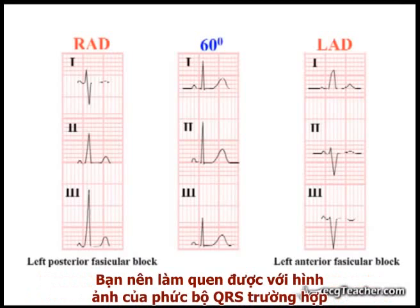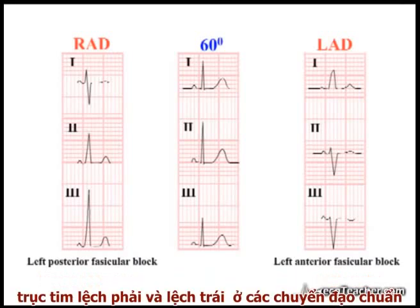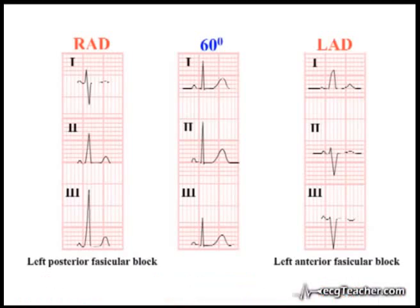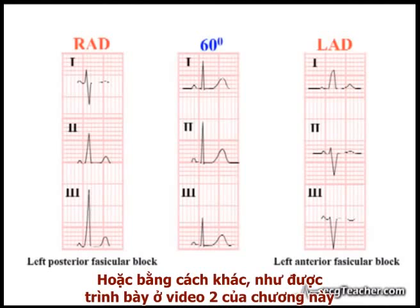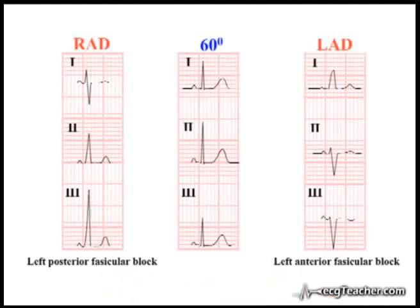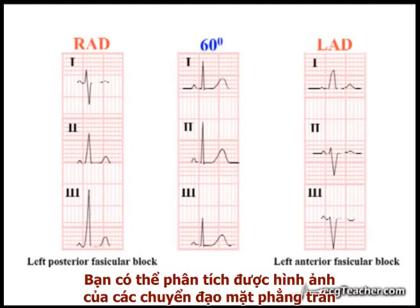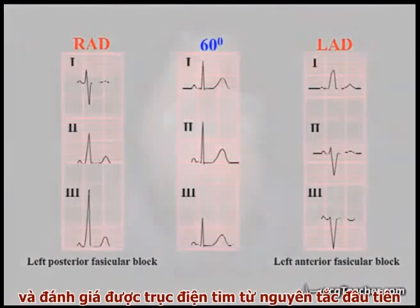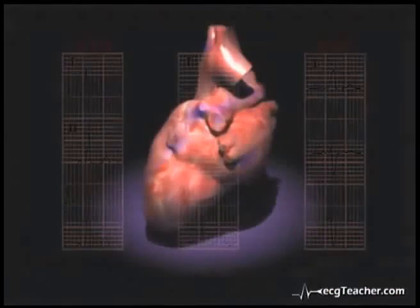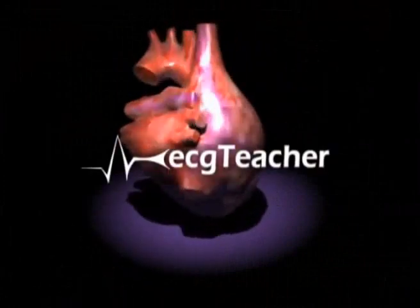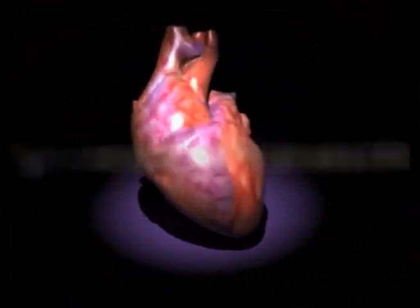It is well worth being familiar with the QRS patterns of left and right axis deviation in the standard limb leads. You may simply memorize these patterns. Alternatively, as outlined in video 2 of this section, you can analyze the morphology of the frontal leads and determine the axis from first principles.